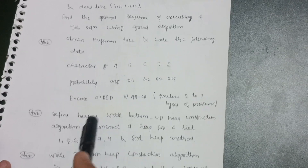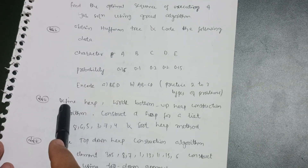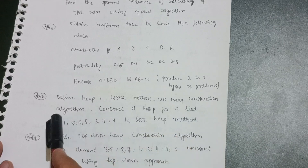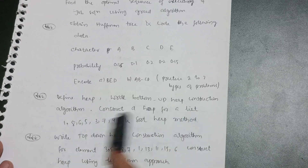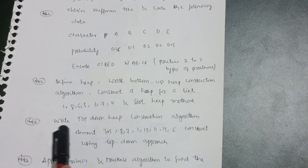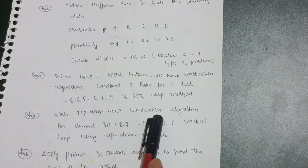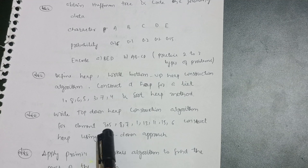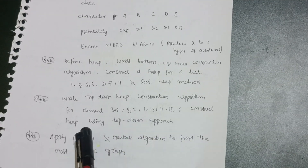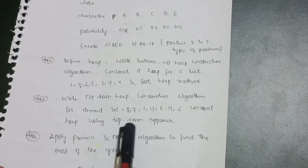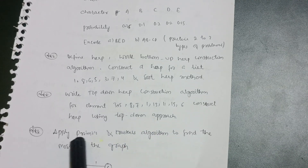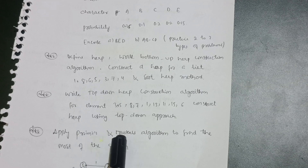Define heap. Write the bottom-up heap construction algorithm and construct a heap for the list {1, 8, 6, 5, 3, 7, 4} and sort using the heap method. Also apply the top-down heap construction algorithm for elements {3, 5, 8, 7, 1, 13, 11, 15, 6} and construct the heap using the top-down approach.